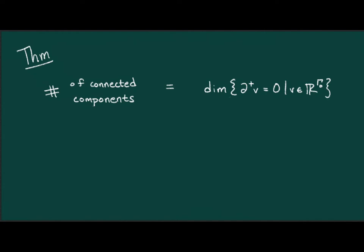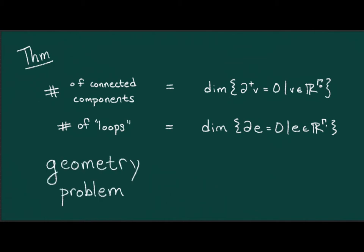Similarly, the number of loops, which I'll define later, but hopefully you can use your imagination to intuit what that means, is equal to the dimension of the kernel of the boundary matrix. So that's great, but let me highlight what's really going on here. We're translating a geometric problem into the problem of counting solutions to linear equations, the coefficients of which encode geometry.